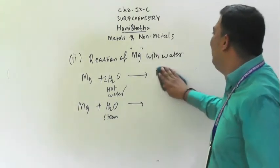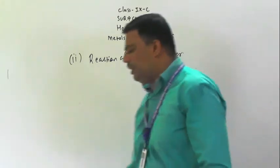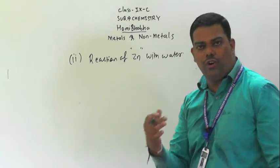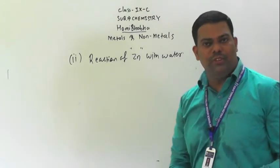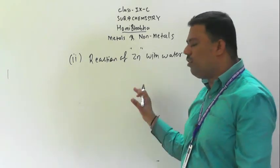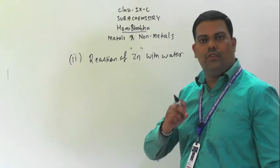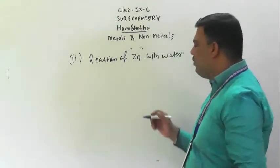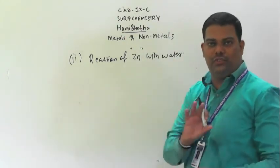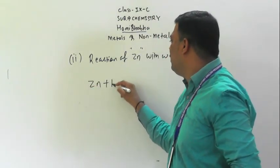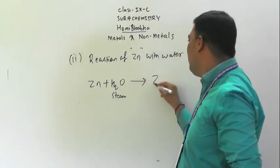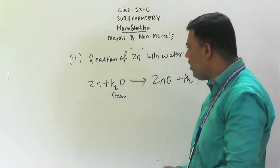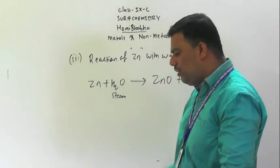Reaction of zinc with water: zinc does not react easily with water, so we use steam. Zn + H2O (steam) → ZnO + H2. Important distinction: sodium and potassium react with cold water at room temperature, magnesium reacts with hot water giving hydroxide, and with steam gives oxide.